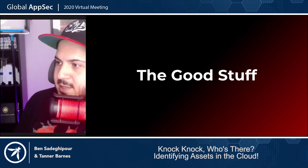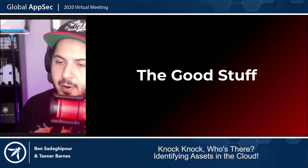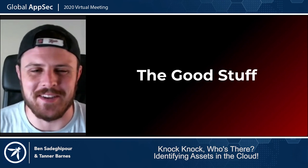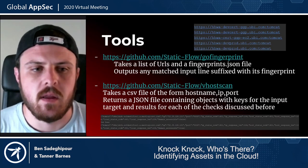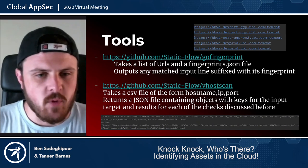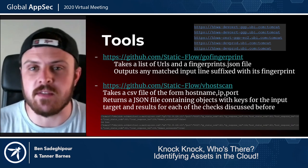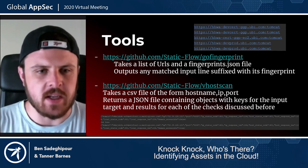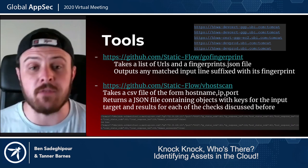These are the tools we wrote to make this easier — they may also help internal security engineers identify assets that shouldn't be out there. The first is GoFingerprint: it takes a list of URLs and a fingerprints.json file containing the different fingerprints you've built. The output gives you the URL that matched, and after the colon, which fingerprint it matched for that URL. We have a basic fingerprints file in the repo for testing, but you're welcome to write your own.